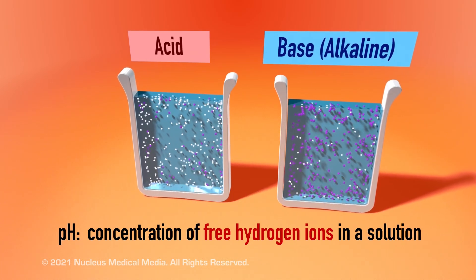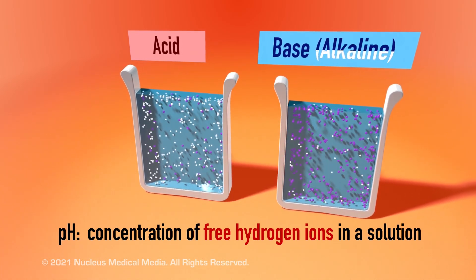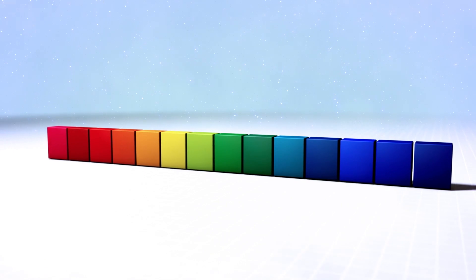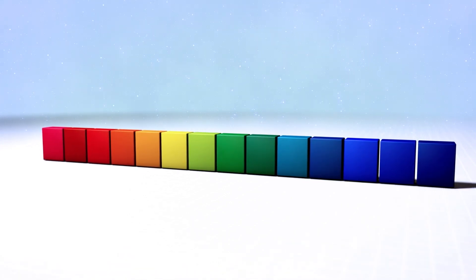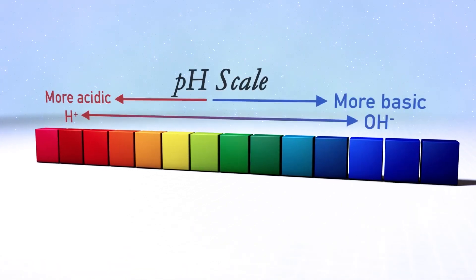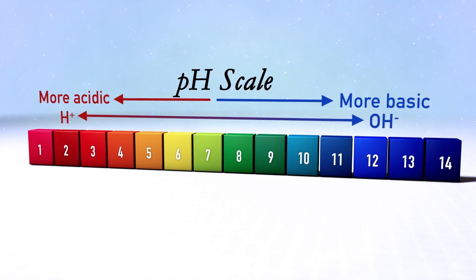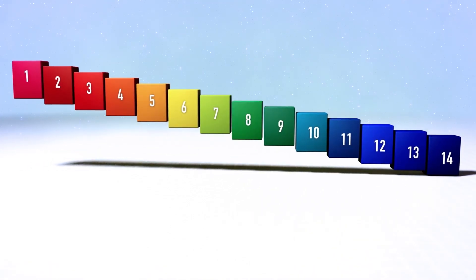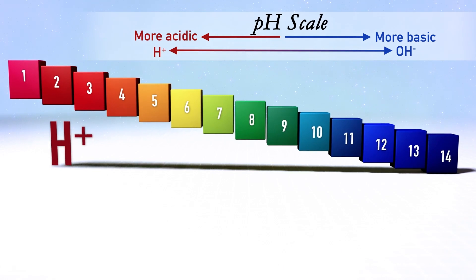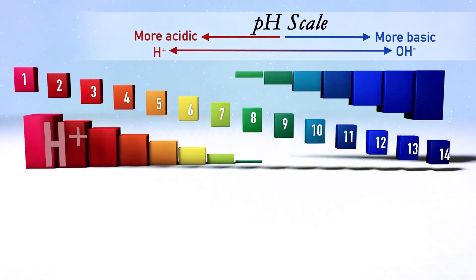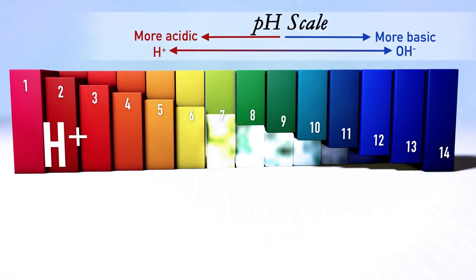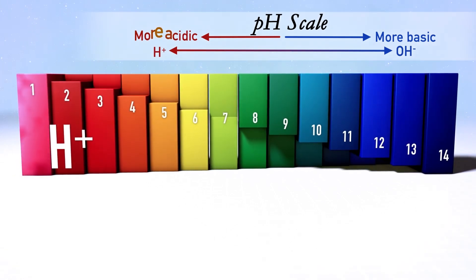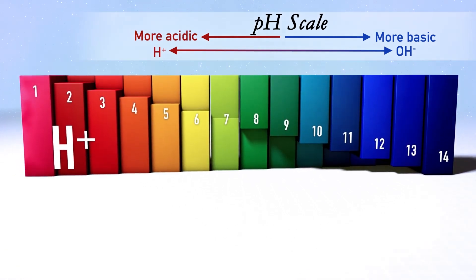Sometimes a base is referred to as being alkaline. To measure how acidic or basic a substance is, scientists use the pH scale, numbered from 1 to 14. The pH scale is an inverse scale of the concentration of hydrogen ions in a solution. The more hydrogen ions it contains, the lower its pH number and the stronger an acid it is.